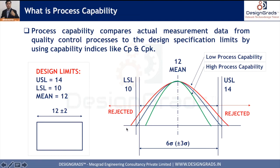On the other hand, the red normal distribution curve represents low process capability, because many parts lie beyond the Lower and Upper Specification Limits. The spread of this curve is larger, meaning more tolerance variation and more parts being rejected — that is not desirable.